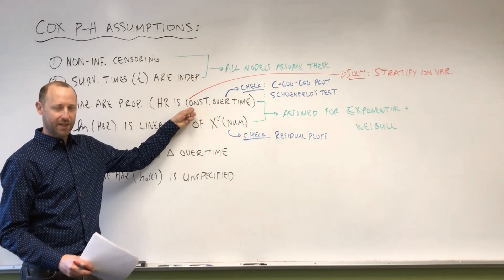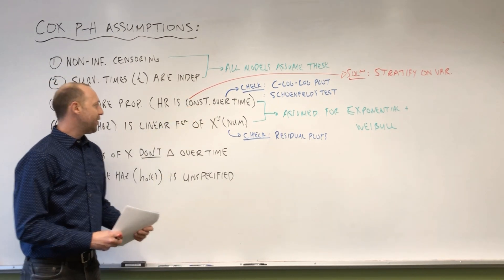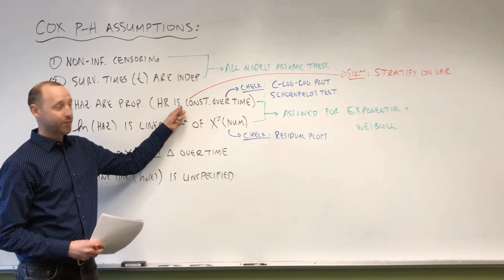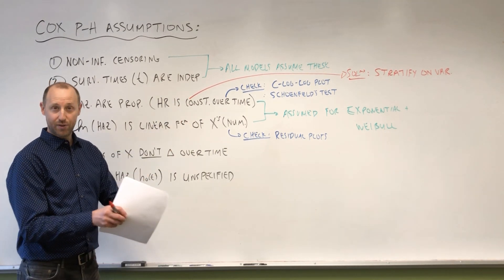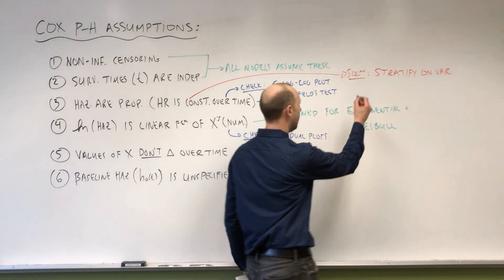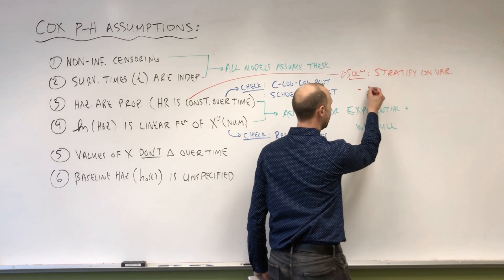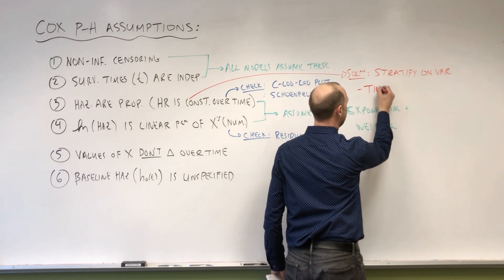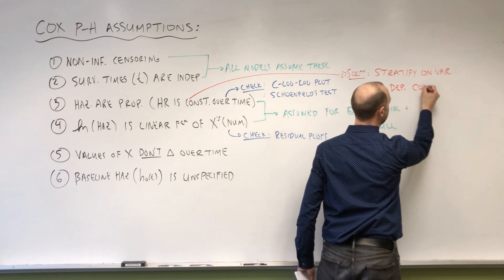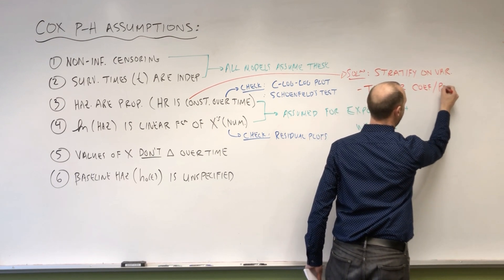Well, in that example we talked about previously, if the hazard ratio for males versus females was not constant over time, it was changing over time, we could stratify on biological sex, fit a model for males, fit a separate model for females. So that's similar to what we did when we were looking at previous regression models. If there was interaction or effect modification, we saw one option was to stratify, fit separate models in each strata. Or another solution is time-dependent coefficients or parameters.